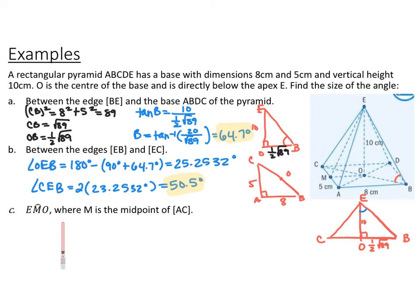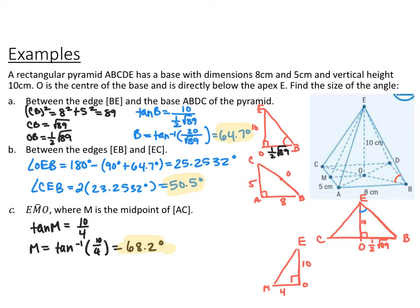For part C, we want angle EMO, where M is the midpoint of side AC. In triangle EMO, the height EO is 10 centimeters, and since O is in the middle, MO is 4 centimeters — half the length of that side. We have opposite and adjacent, so tangent of angle M equals 10 over 4. Therefore, M equals tangent inverse of 10 over 4, or 68.2 degrees.